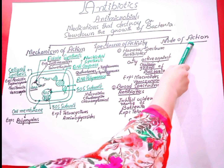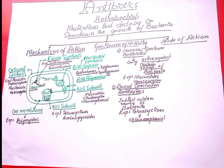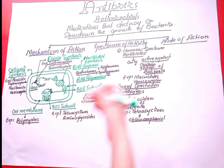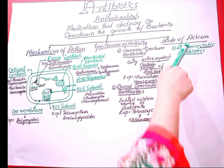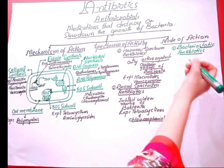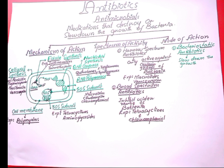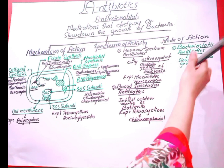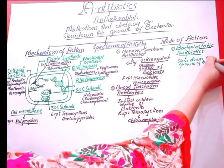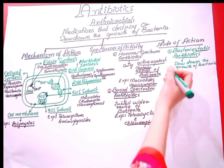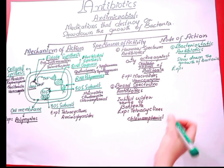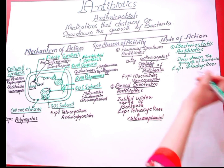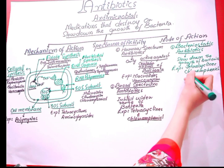The third classification of antibiotics is according to the mode of action, which has two subclasses: bacteriostatic and bactericidal. Bacteriostatic antibiotics are medications that slow down the growth of bacteria. Examples of bacteriostatic antibiotics are tetracyclines, chloramphenicol, erythromycin, and lincomycin.